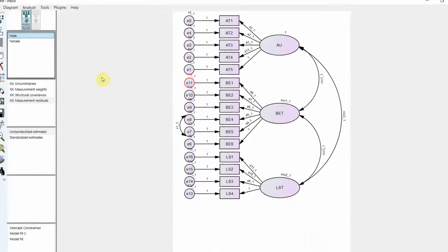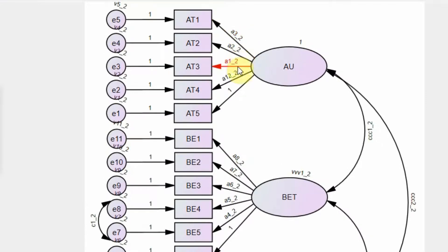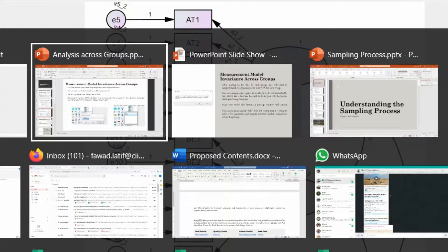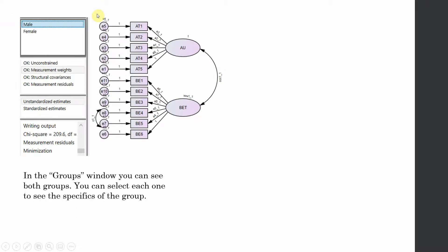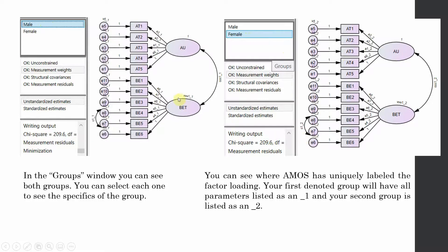This labeling is for group one, so you will see number one on the parameters. For group two you will see number two. In the groups window you will see your groups, and if you click them you will see the parameters labeled. For the first group male it's labeled one, and for the second group female they are labeled as two.